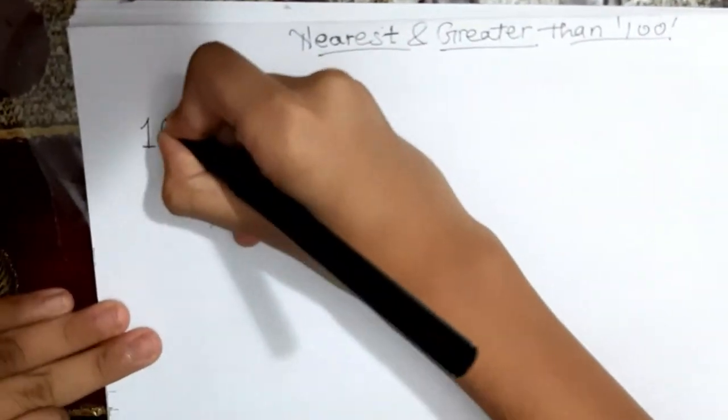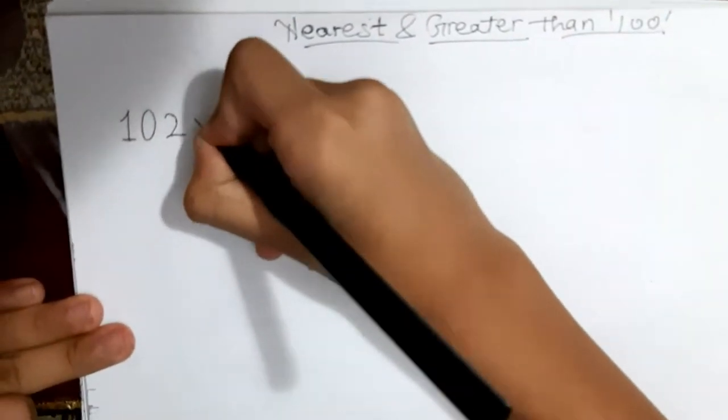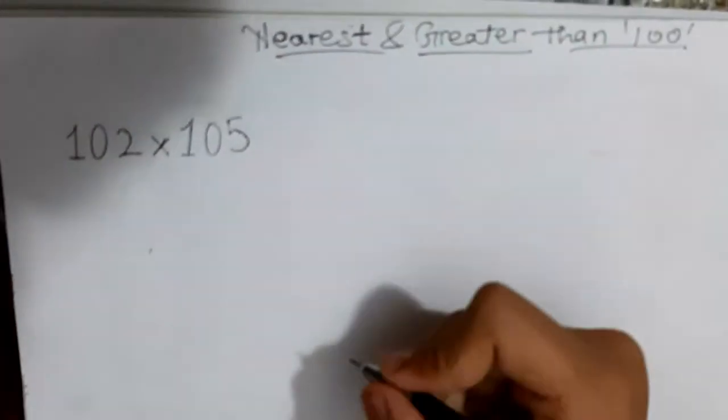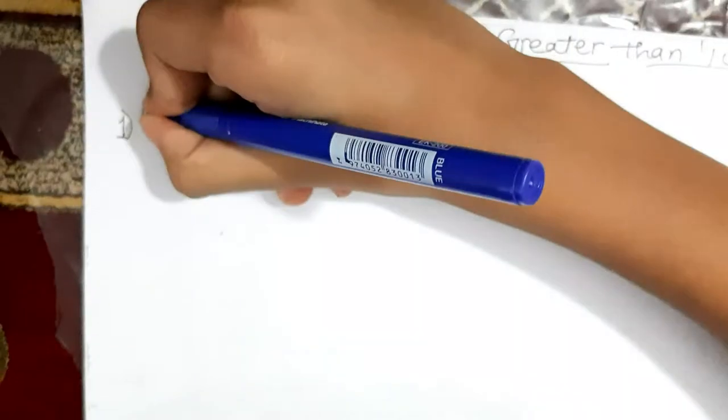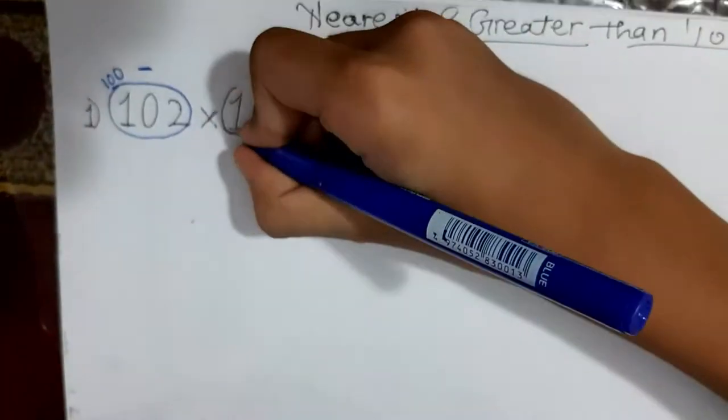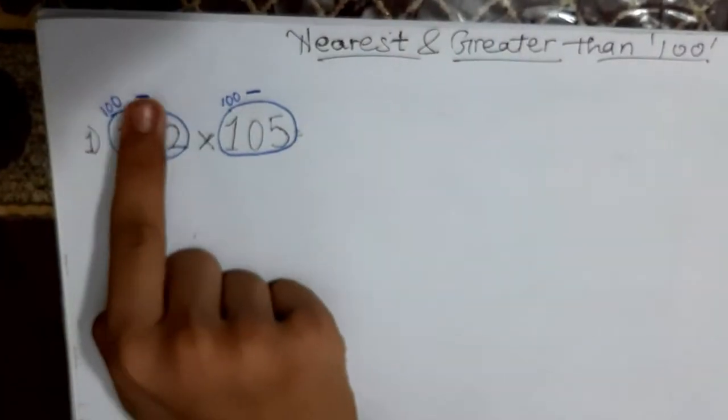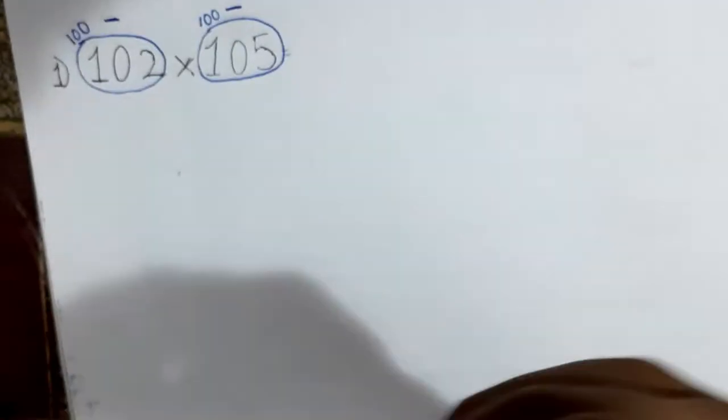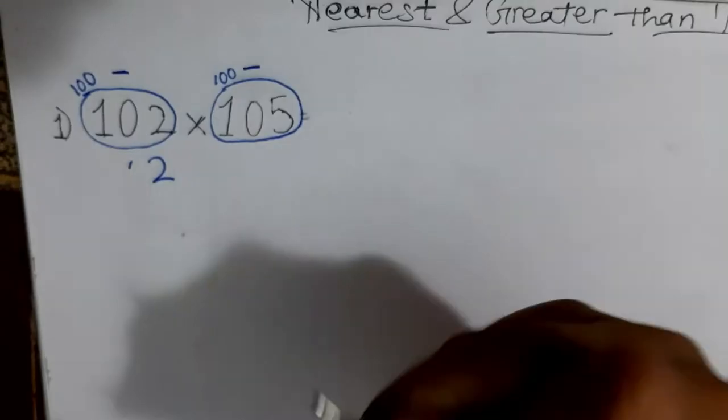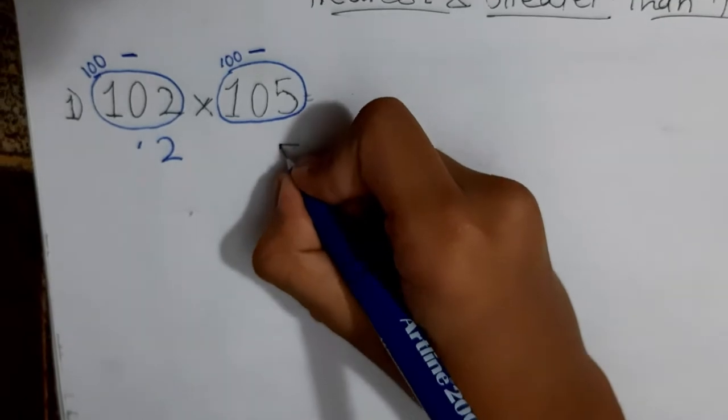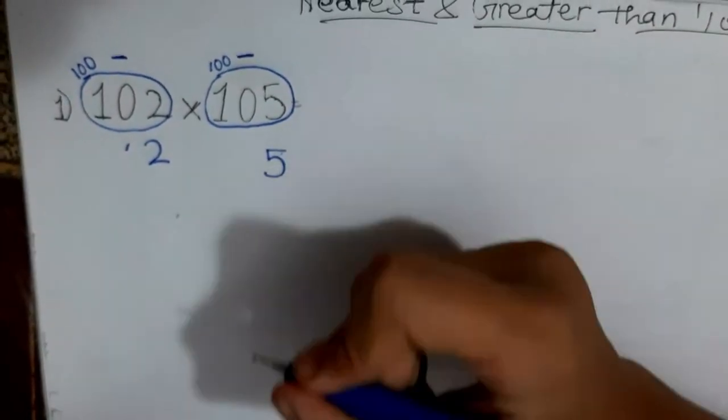I have taken 102 times 105. First, we will subtract both numbers from 100. We are going to minus 102 with 100 and our answer will be 2. And we will do the same to 105 and our answer will be 5.